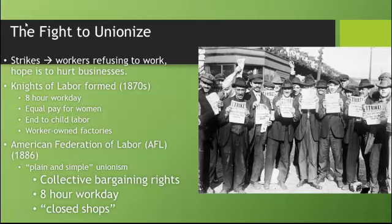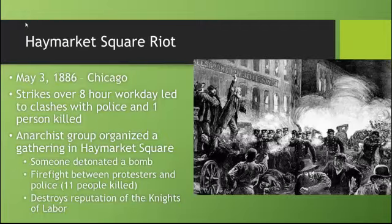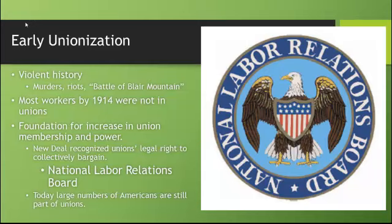This union movement started out as a very brutal fight to get recognition from business owners. In Chicago in 1886, there was a riot in Haymarket Square over the eight-hour workday. A bomb went off, there was a firefight, and 12 people were killed — giving you an idea of how violent some of these labor fights could get. There was also the Battle of Blair Mountain, where coal miners fought against the army and coal mine owners. By 1914, most workers were not in unions, but it created the foundation for an increase in union membership and power. By the 1930s, the New Deal recognized the union's legal right to collectively bargain, and today large numbers of Americans are still part of unions that provide better working conditions and wages for their members.